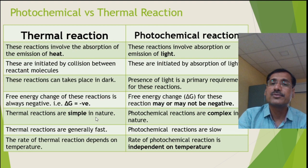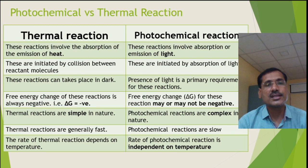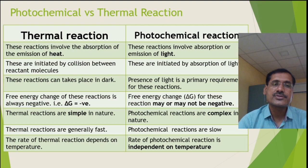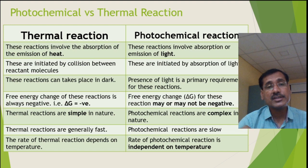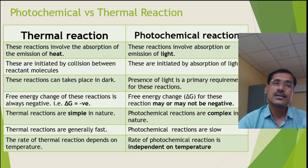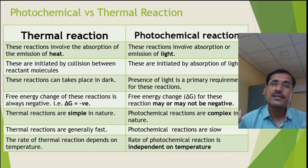Thermal reactions are simple in nature whereas photochemical reactions are complex. For example, ethyl bromide reacting with aqueous NaOH follows either SN1 or SN2 pathway — a straightforward mechanism of bond breaking and bond making leading to ethyl alcohol. Photochemical reactions are complex because they involve two steps: first, absorption of light and excitation of the reactant molecule; second, the excited molecule may form a product or undergo other phenomena that may not lead to a product. Sometimes this leads to chain reactions, which is why photochemical reactions are referred to as complex in nature.